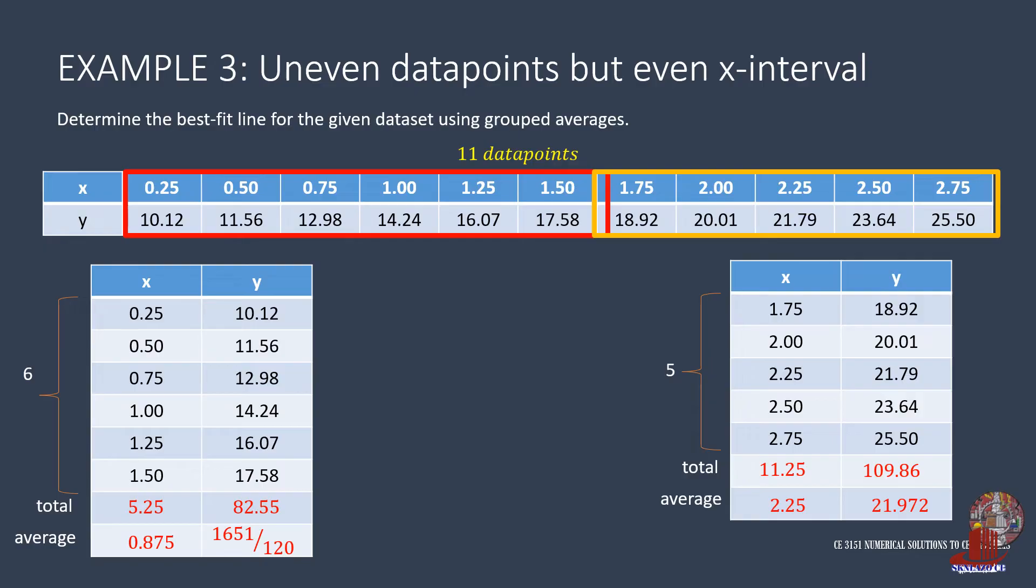With the averages known, create the two linear equations, whereby the first group yields 1651 over 120, as equal to 0.875A plus B. The second equation is 21.972, as equal to 2.25A plus B.